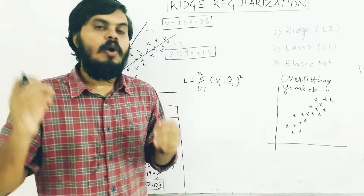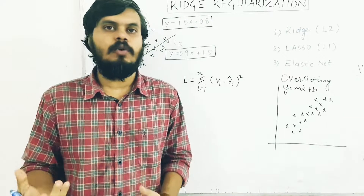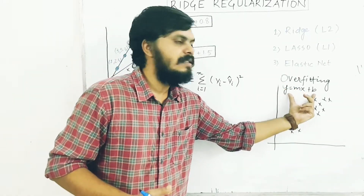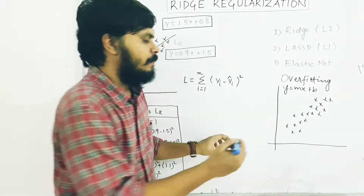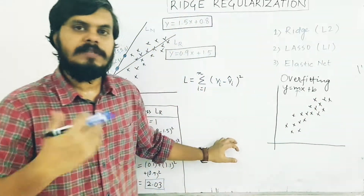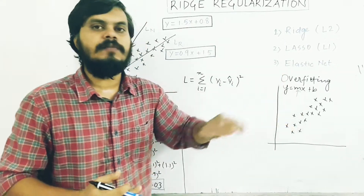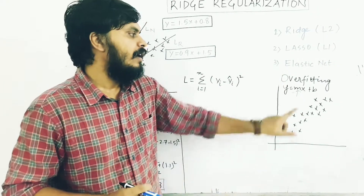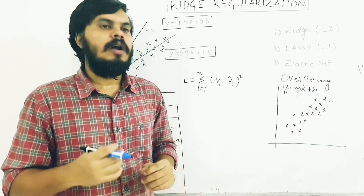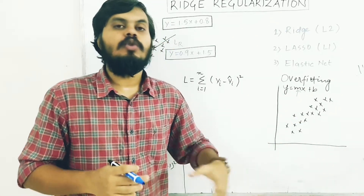Every time you see an overfitted system, an overfitted model, an overfitted line segment, m will have a very high value. So if you talk about overfitting in linear regression terms, it means that the slope m is extremely high. And if this value is very low, then it will be underfitting.